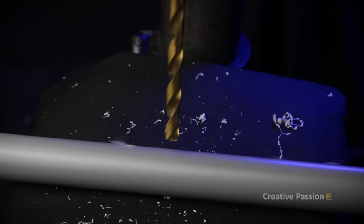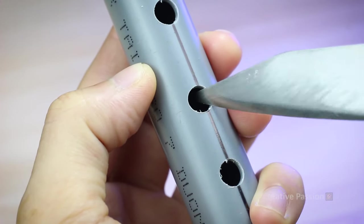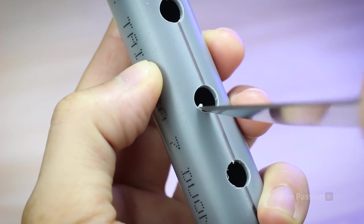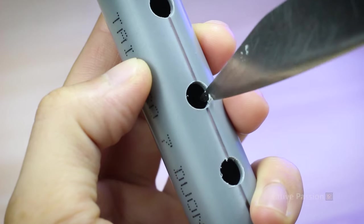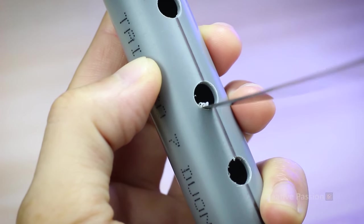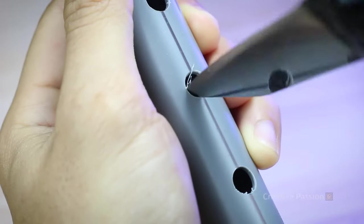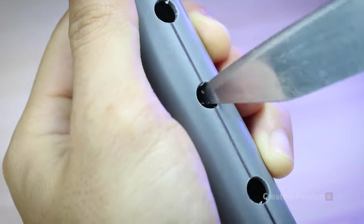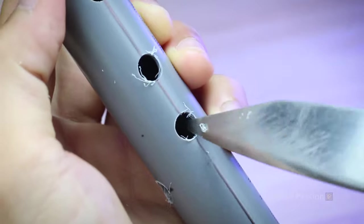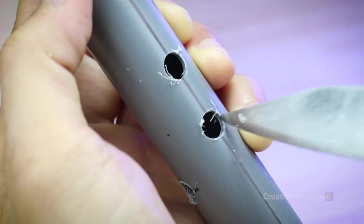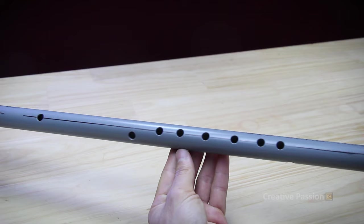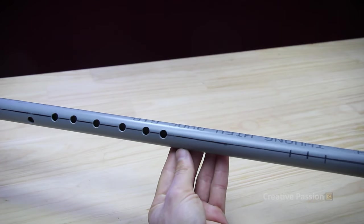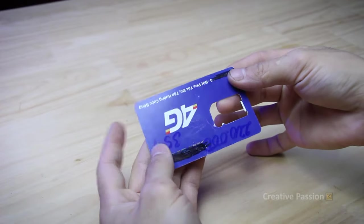Next we will use a 3.5mm drill bit to re-drill the holes. And use a tapered bit to ream and finish these holes for better aesthetics. Okay, so the drilling part is done.